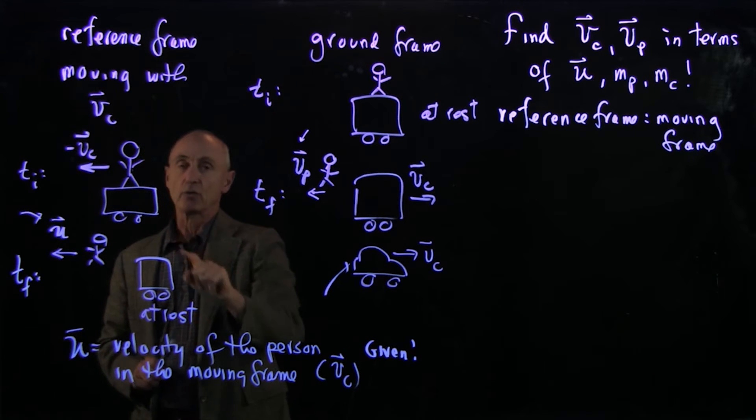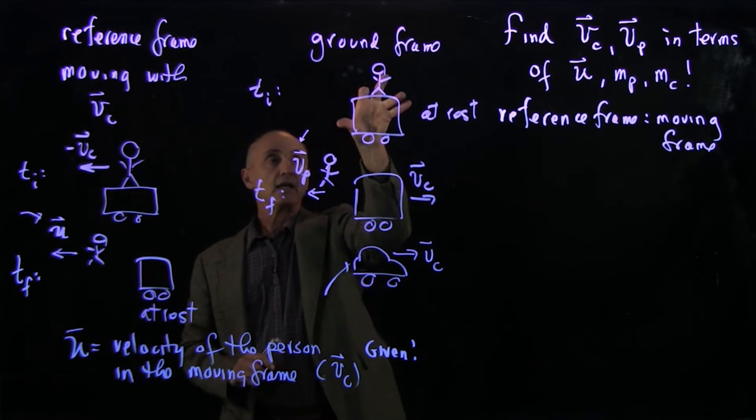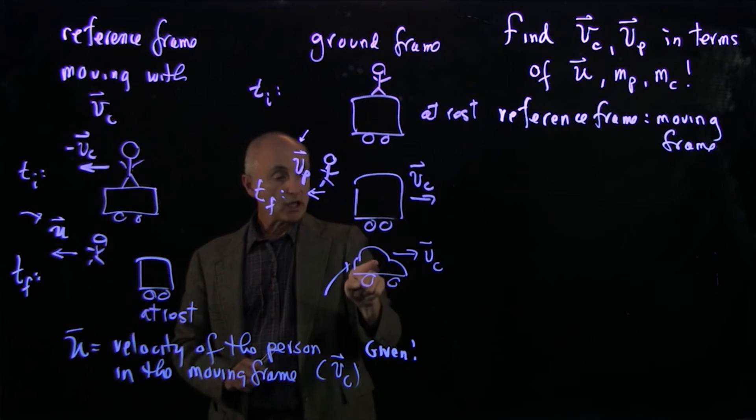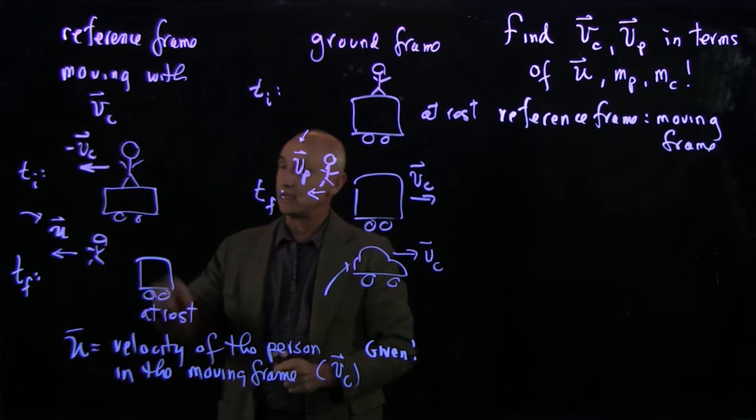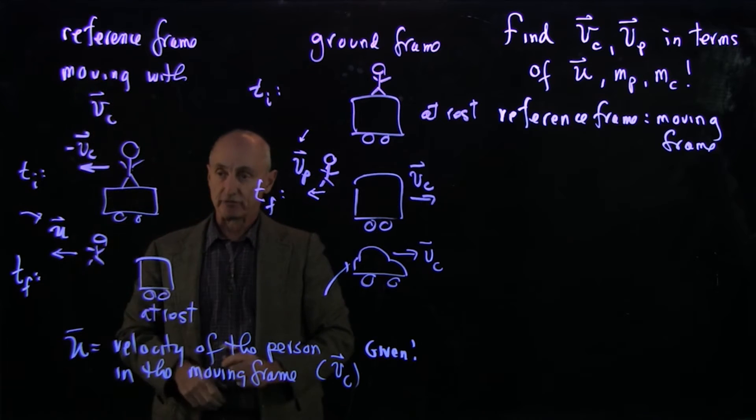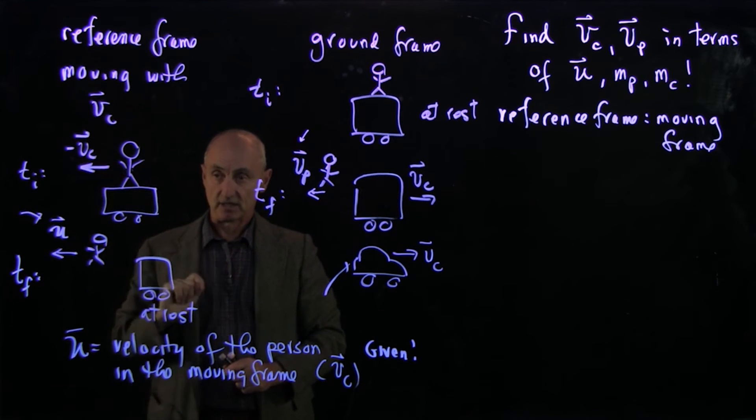The tricky part was to realize that in the ground frame, when the cart is at rest here in the ground frame, an observer moving with speed vc would see the person in the cart moving backwards in the moving frame with the speed minus vc.